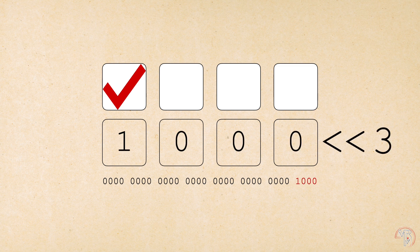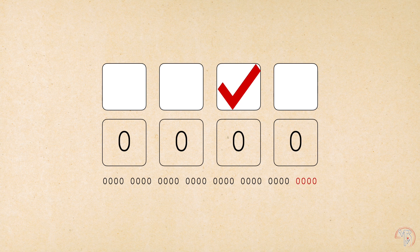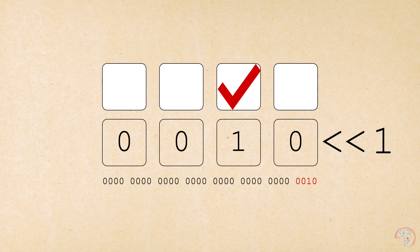So by shifting the rightmost one to the left three times, we get one, zero, zero, zero, which corresponds to the fourth checkbox being on. Now, what if we wanted to have the second checkbox on? Well, we shift one to the left by one. And we get zero, zero, one, zero.